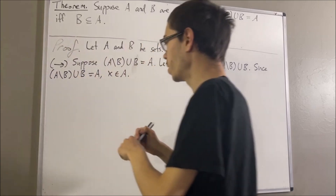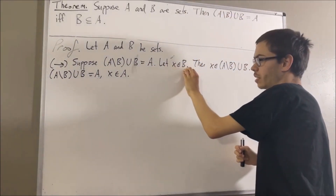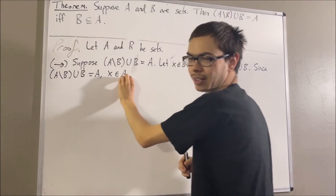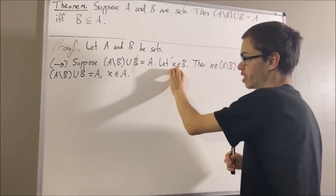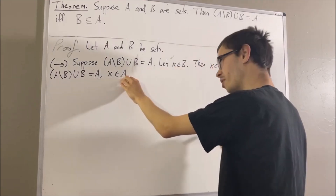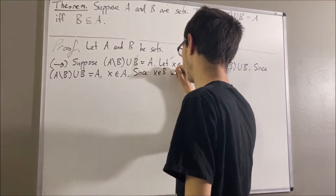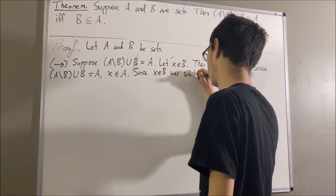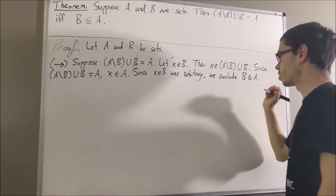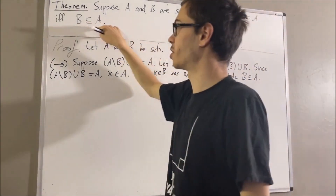However, since this set is equal to A, we have that X is an element of A. Putting this together, we gave ourselves an arbitrary element in B and showed that same element is also in A. Since X was arbitrary, this means everything in B is also in A. So B is a subset of A. We have proven the forward direction.